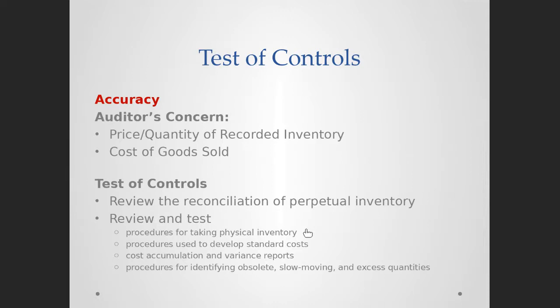We also want to review and test procedures for taking physical inventory. Every business takes physical inventory counts — they count the actual physical inventory and match it with the recorded inventory at least once a year; some businesses do it many more times. We ask: when do you do it and how many times? Physical inventory counts are usually done during a slow production period, when inventory is not rapidly moving from raw material to work in process to finished goods, because if production is fast, items might be counted twice.